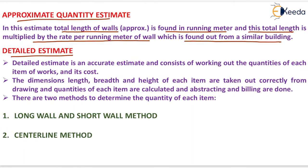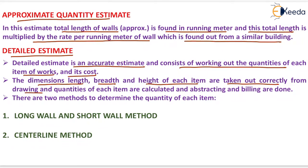The detailed estimate is the most accurate estimate. It consists of working out the quantities of each item of work and its cost. The dimensions — length, breadth, and height — of each item are taken correctly from the drawing, quantities of each item are calculated, and abstracting and billing are done. There are two methods to determine the quantity of each item: the long wall and short wall method, and the centerline method.